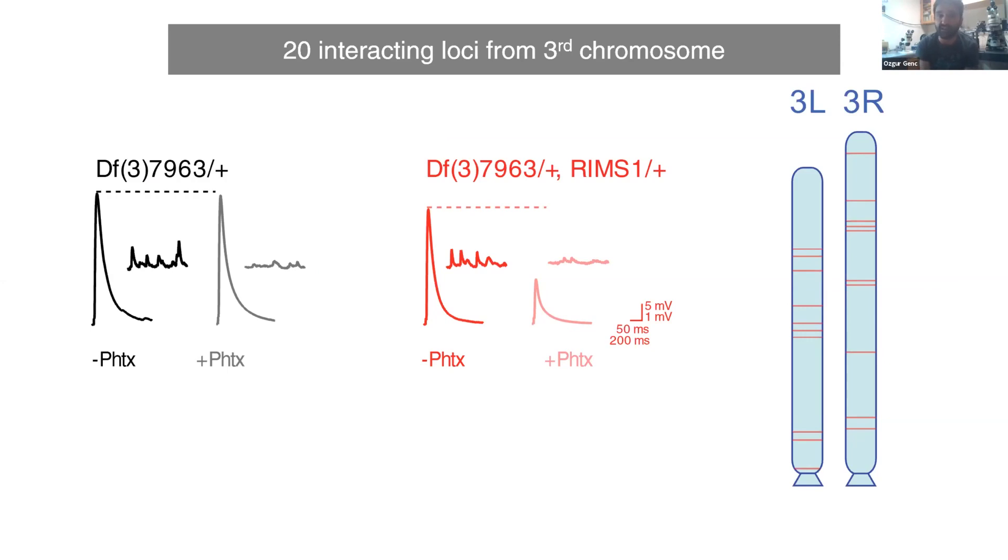This is an example of this interaction. A deficiency itself as a heterozygous mutation has no impairment in homeostatic plasticity, whereas when we put this with the autism mutation together, this deficiency now shows an impairment. This shows a double heterozygous interaction, and that is how we define this locus in the Drosophila genome.